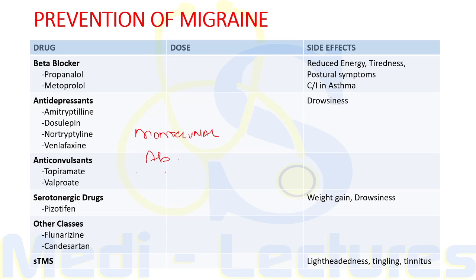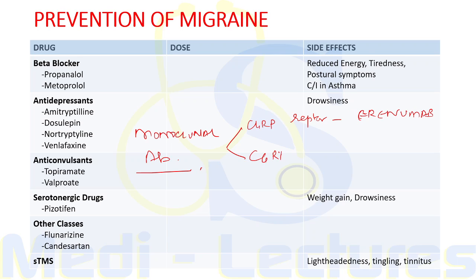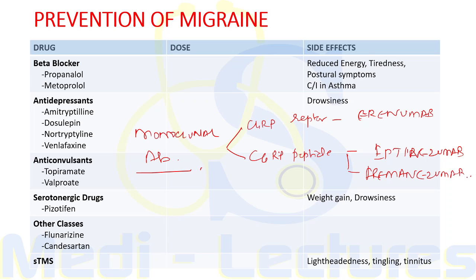For prevention we also have monoclonal antibodies, which can be targeted towards the CGRP receptor — the drug erenumab — or against the CGRP peptide itself, which includes eptinezumab, fremanezumab, and galcanezumab. That was all for this lecture.